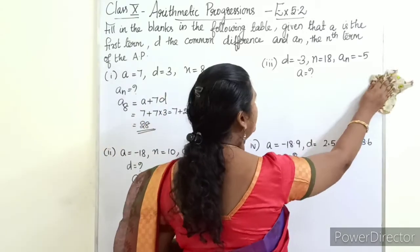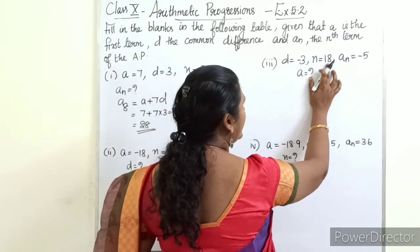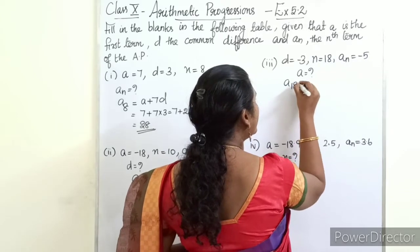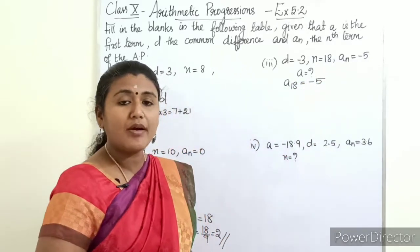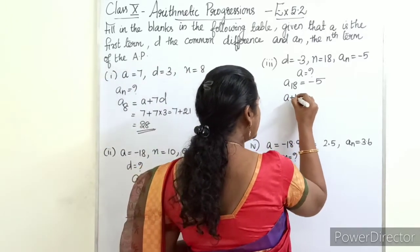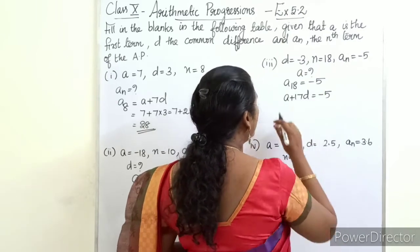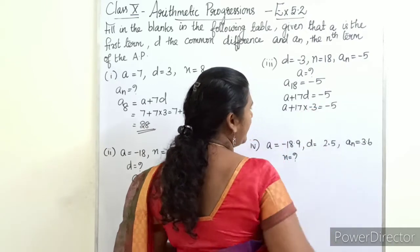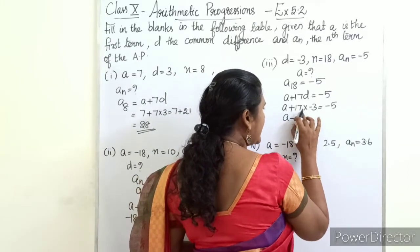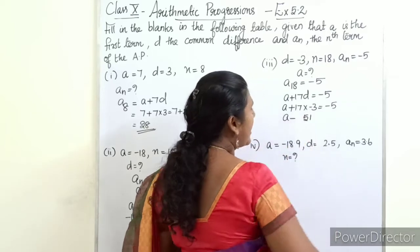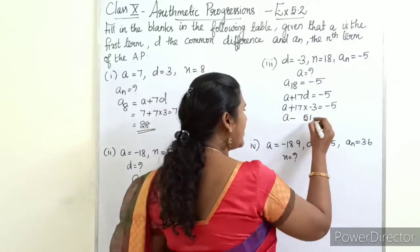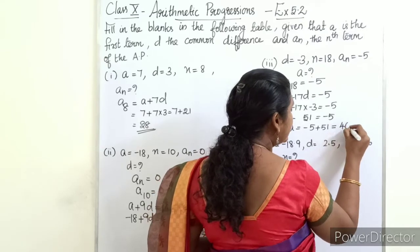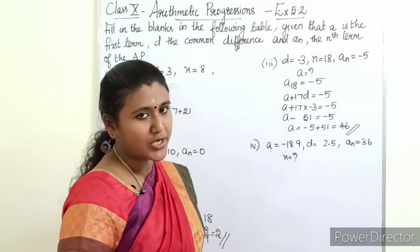Sub-question 3: d = −3, n = 18, a_n = −5; find a. Since n = 18, a_18 = −5. Using the formula a + 17d = −5, we substitute d = −3: a + 17×(−3) = −5, so a − 51 = −5, giving a = −5 + 51 = 46.